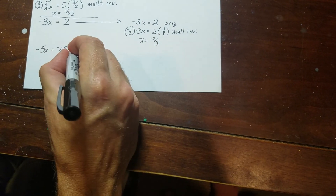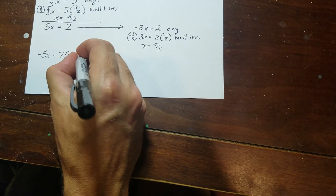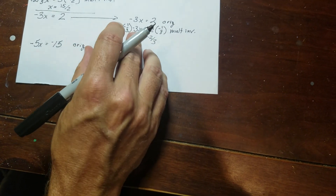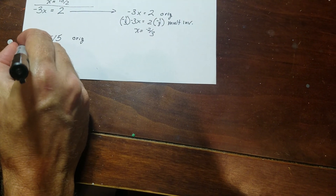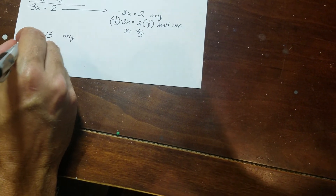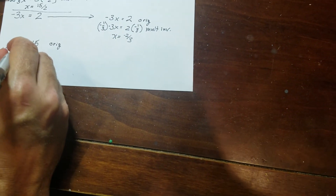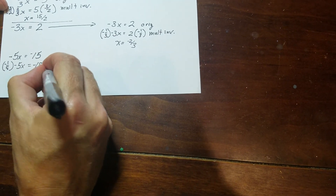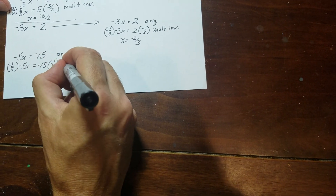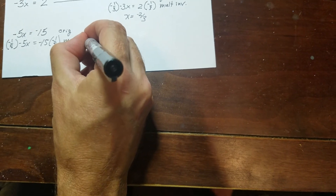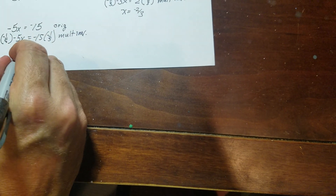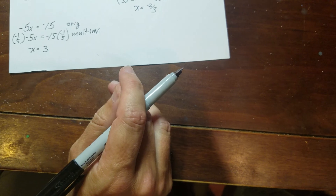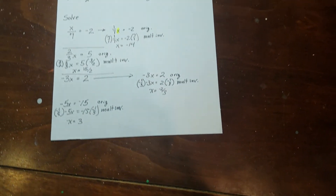For the last equation, multiply both sides by negative 1 fifth — the multiplicative inverse of negative 5. So negative 1 fifth times negative 5x equals negative 15 times negative 1 fifth. The left side becomes x, and the right side gives x equals 3. That's all there is to it — that's how you use the multiplicative inverse.